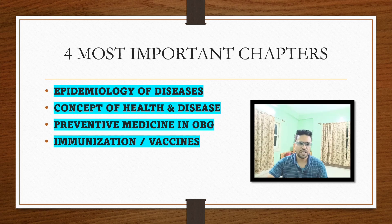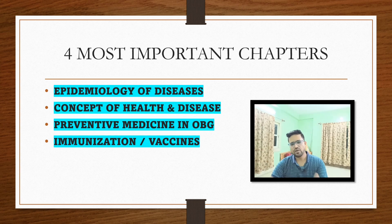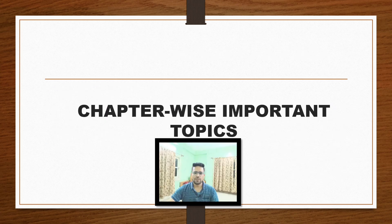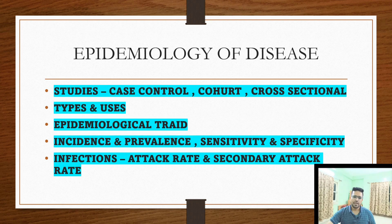Now we'll discuss the four most important chapters. If you are starting your preparation for UPSC CMS and reading your PSM part, firstly read these four chapters: epidemiology of diseases, concept of health and diseases, preventive medicine in OBG, and immunization and different types of vaccines. Finish these four chapters first, then move to other chapters like biostatistics and the environment part.